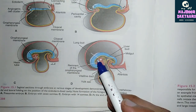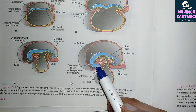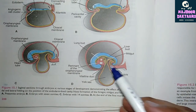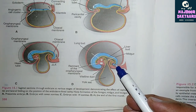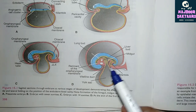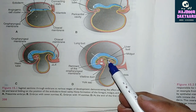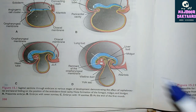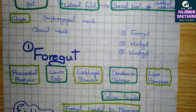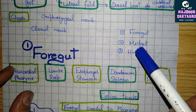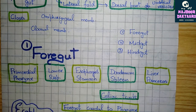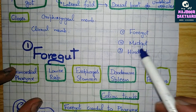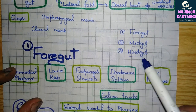The primordial digestive tract, shown here in yellow, consists of a head closed by the oropharyngeal membrane, a tail closed by the cloacal membrane, and a lateral fold formed by the invagination of the yolk sac during folding. Based upon the arterial supply, the digestive tract is divided into foregut, midgut, and hindgut.